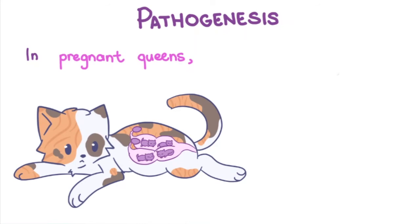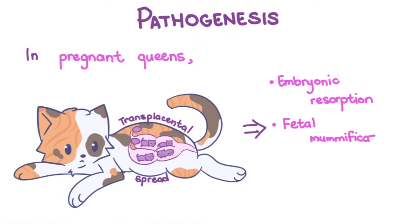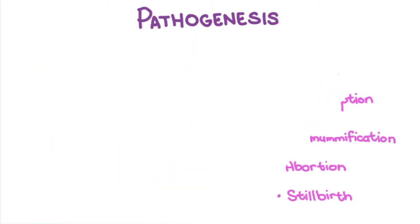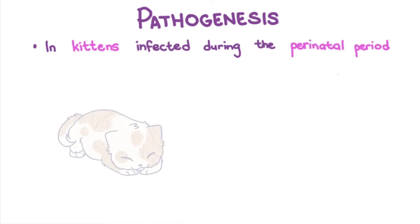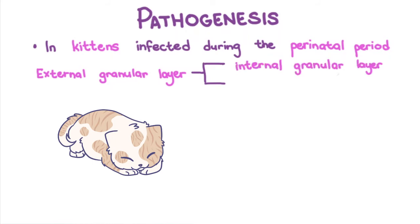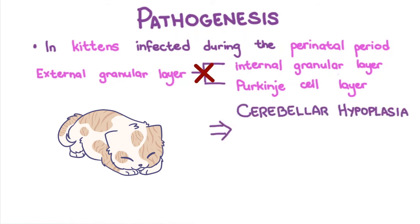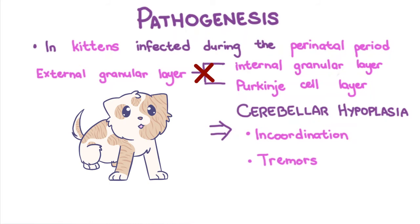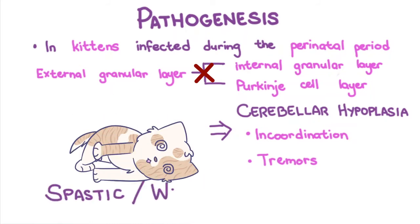In pregnant queens, the virus may spread transplacentally, leading to embryonic resorption, fetal mummification, abortion, or stillbirth. In kittens infected during the perinatal period — between the last two weeks of gestation and first two weeks of life — the actively dividing cells in the germinal epithelium of the cerebellum are infected. The external granular layer normally rapidly proliferates and migrates to form the internal granular layer and Purkinje cell layer at this time. Infected kittens develop cerebellar hypoplasia, resulting in incoordination and tremors, most noticeable when the kittens start walking at approximately three weeks of age. These signs give the condition the name spastic or wobbly cat syndrome.